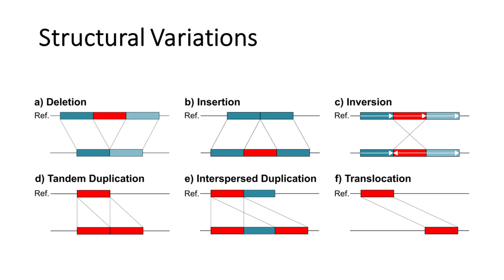There are two types of genetic duplications. Tandem duplications happen where a segment of a chromosome is duplicated right next to the original copy. Interspersed duplications happen where a segment of the chromosome is duplicated to somewhere else on the genome. Deletions and duplications are often called copy number variations, or CNVs.